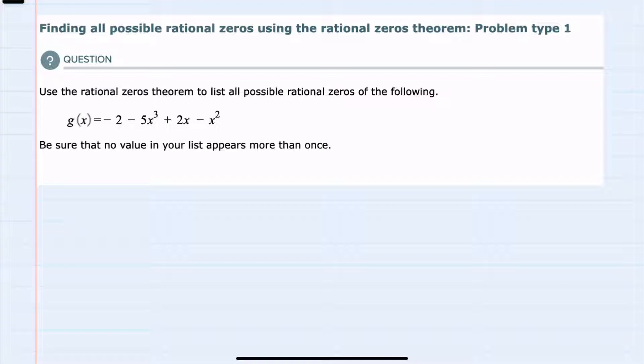We're given the polynomial g(x), and we're asked to find all of the possible rational zeros. Be sure that no value in the list appears more than once.